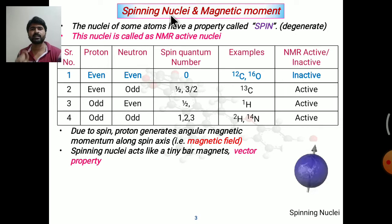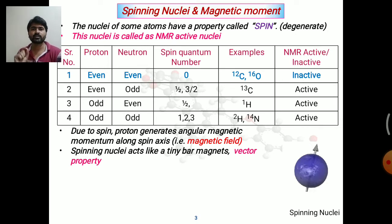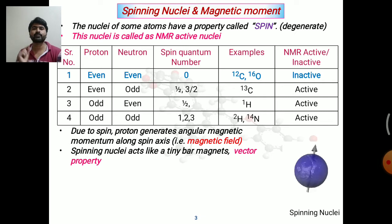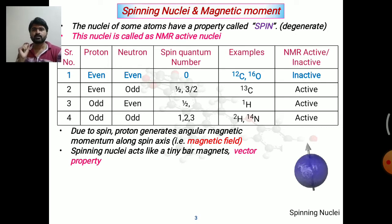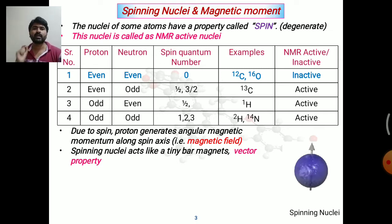The very first concept is spinning nuclei and the magnetic moment. We know that an electron is a charged particle and it has a property called spin, meaning it can rotate around its own axis as well as around the nucleus. Similarly, the nuclei of some atoms also have the property of spin, and those nuclei which have such spin are generally called NMR active nuclei.